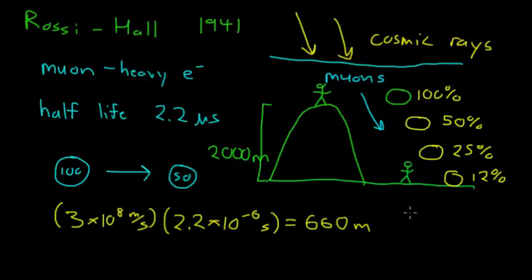But what they noticed is that you measure way more muons than you would have expected. Instead of it being 12% of the amount that you measured at the top of the mountain, it was closer to 60%. So it's not even close.